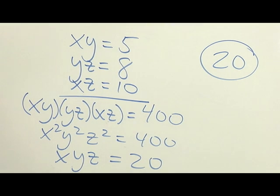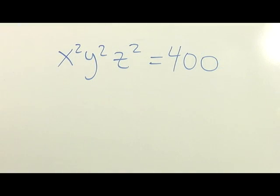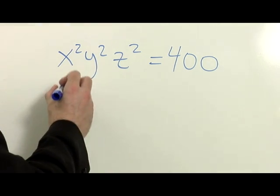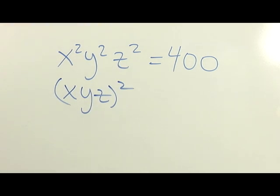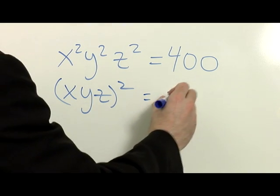And now, a more detailed explanation of how we got from this step to this step. By one of the basic laws of exponents, we can rewrite x squared, y squared, z squared as x, y, z squared. And 400 can be rewritten as 20 squared.